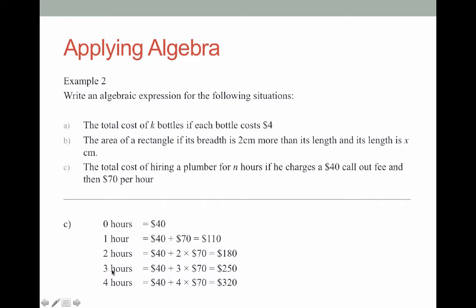So we want to work for n hours. So he's still going to get that $40 call out fee but then he's going to get the number of hours he works times $70. And to write that algebraically that is without the time symbol as a pattern it would just be 40 plus 70n. And that is the expression that represents the situation.